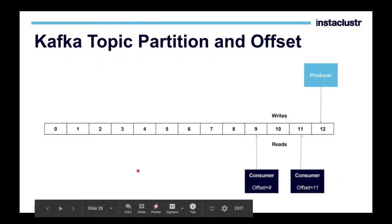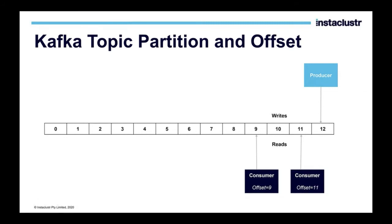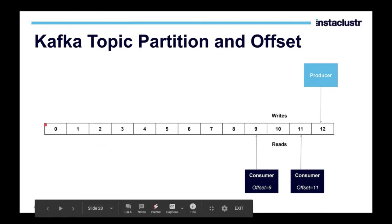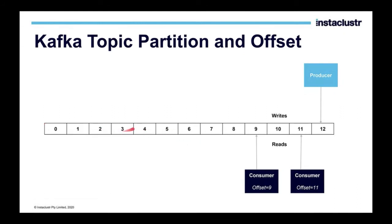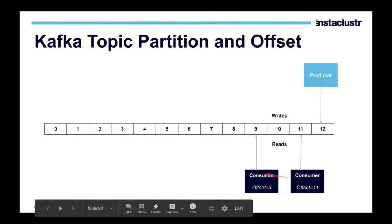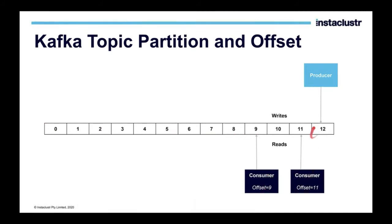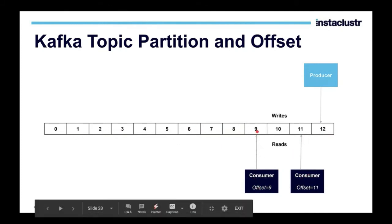Looking at the Kafka topic partition and offset visually: there are messages which were produced — producer is producing message number 12. Each message has its own sequence number. One consumer has consumed messages until offset number 9, so the offset for that consumer is 9. Another consumer has consumed until offset 11. This part is reading and this part is writing — very simple, very elegant.